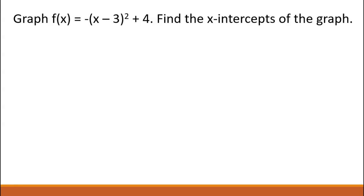Let's look at an example. Graph f(x) equals negative (x minus 3) squared plus 4 and find the x-intercepts. First, identify how the parent graph has changed: it has shifted right 3, up 4, and then flipped down.